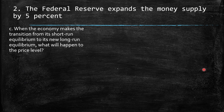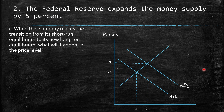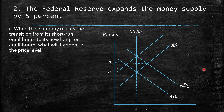c. When the economy transitions from its short-run equilibrium to its new long-run equilibrium, the price level rises, as we saw with the shift to P2Y2. The long-run aggregate supply is not affected by prices. In the long run, the aggregate supply adjusts, and we face a decrease in short-run aggregate supply to keep the same level of output.